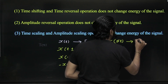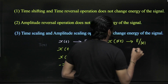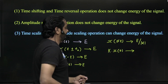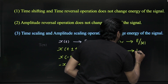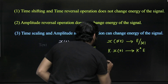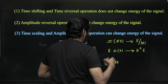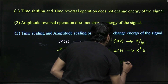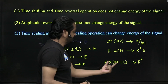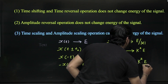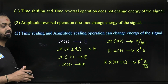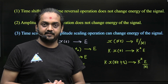If there is amplitude scaling k·x(t), where k is an amplification or scaling factor, then energy will be k²·E. And if there are both amplitude scaling and time scaling operations simultaneously, then due to amplitude scaling it is k² and due to time scaling it is E / |α|, giving k²·E / |α|. These are very important points about the energy of the signal that you have to remember.